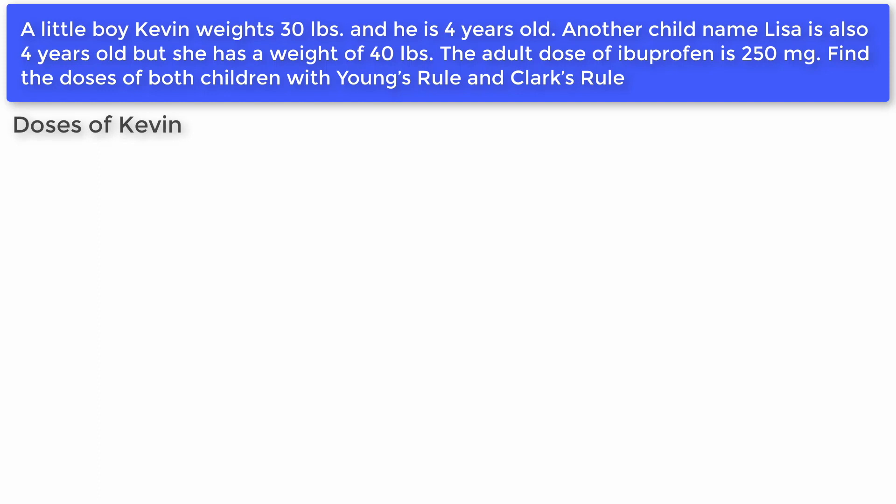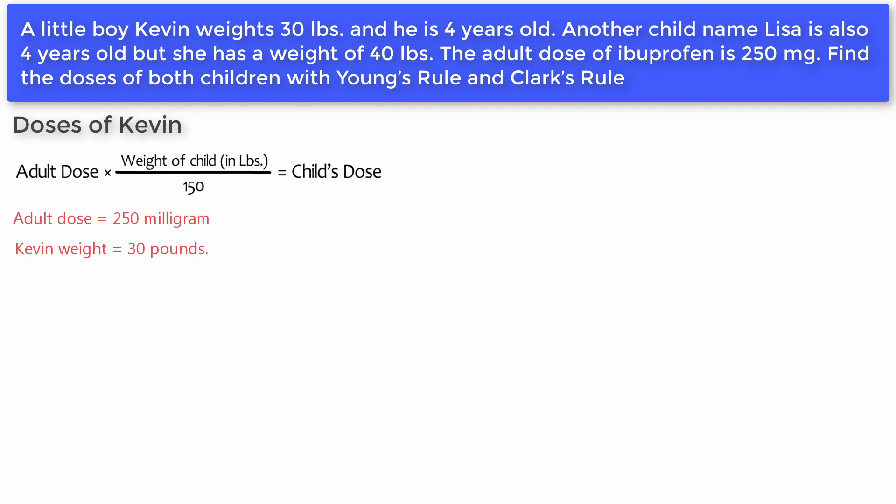Let's calculate the dose for Kevin using Clark's Rule: adult dose times weight of child divided by 150 equals child's dose. Adult dose equals 250 milligrams, Kevin's weight equals 30 pounds. So: 250 times 30 divided by 150 equals 250 times 0.20, which equals 50 milligrams.